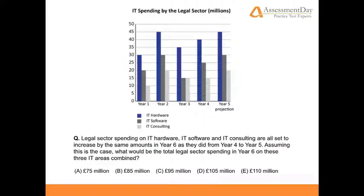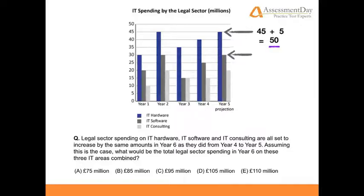The question asks us to imagine what year 6 would be if this increase remained the same. Thus, let's add a £5 million increase to our year 5 figures. IT hardware, the dark blue, would increase from 45 plus 5 equals 50. IT software: 30 plus 5 equals 35. And lastly, IT consulting: 20 plus 5 equals 25.